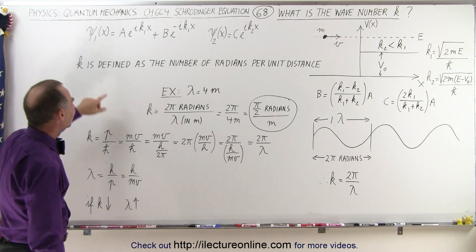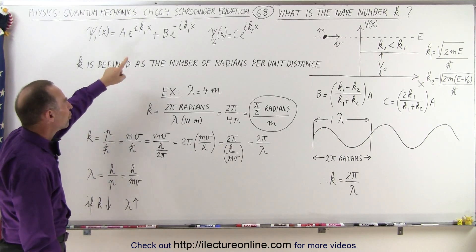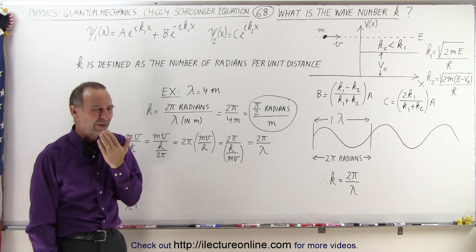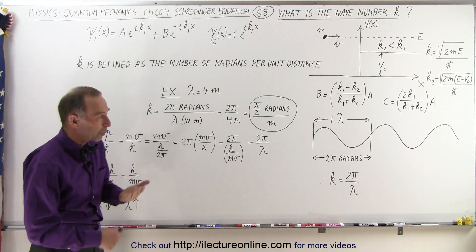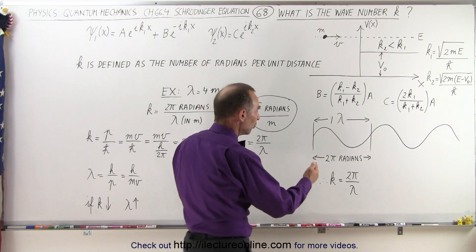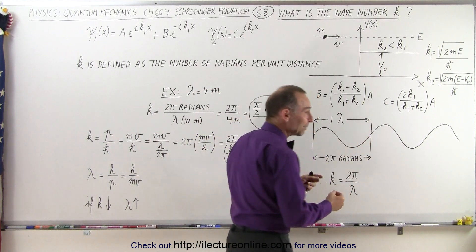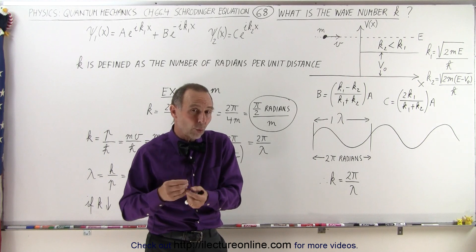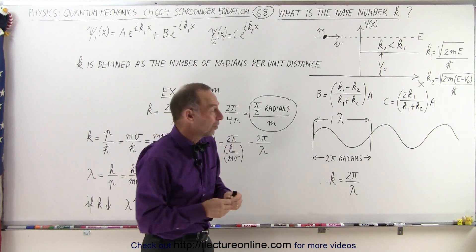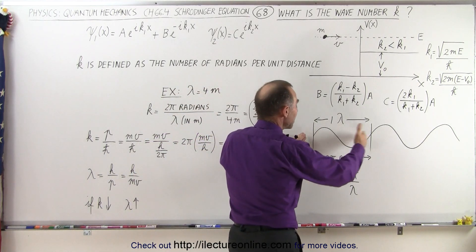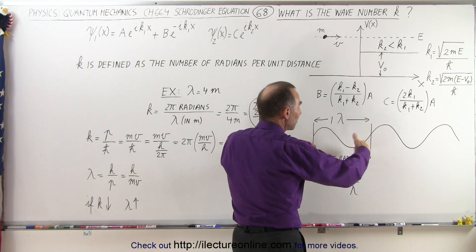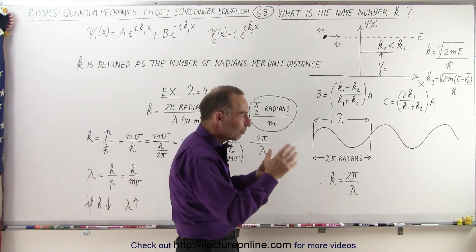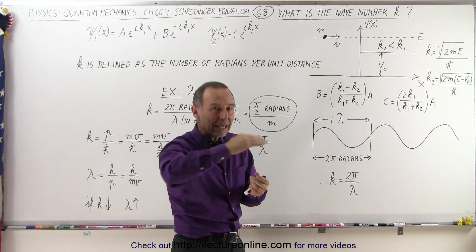Well it turns out that k is defined as the number of radians per unit distance. So what does that have to do with waves? Well when we take a look at a wave, notice that the wave does have a wavelength and a wavelength is equivalent to 360 degrees or 2π radians. So we can think of the wavelength of a wave to be equivalent to 2π radians when you think about the equivalents of a circle and a wave.